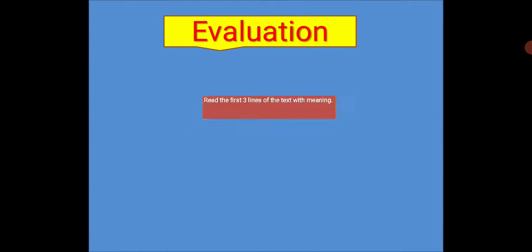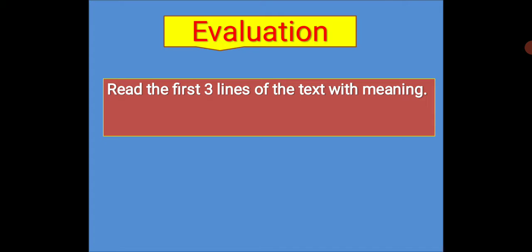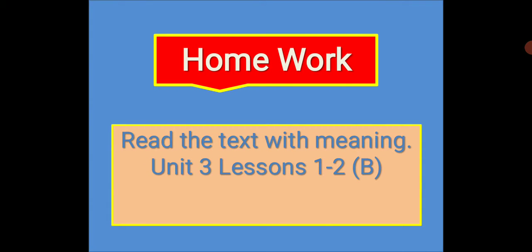Now, evaluation. Dear students, read the first three lines of the text with meaning. I hope you can read it beautifully. For homework: read the text with meaning — Unit 3, Lessons 1 to 2, Activity B.